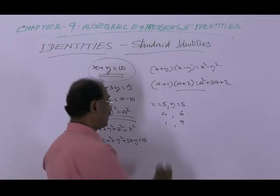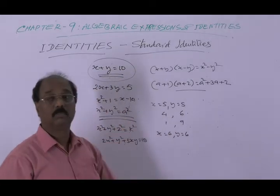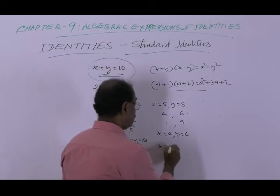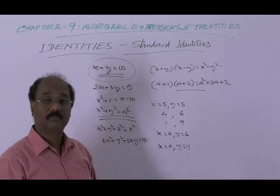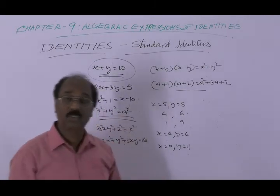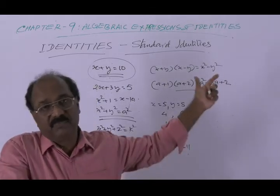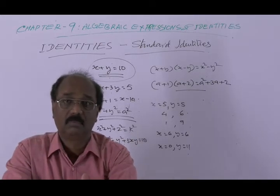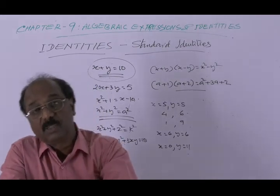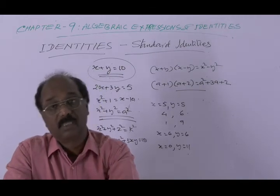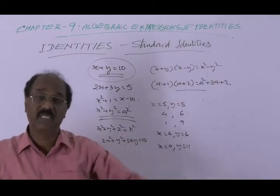If we take x equal to 6 and y equal to 6, the equation is not true, because x plus y would be 12, not 10. So for some values the equation is true, and for some other values the equation is not true. Some other equations are such that the equation is true for all values of the variables involved.